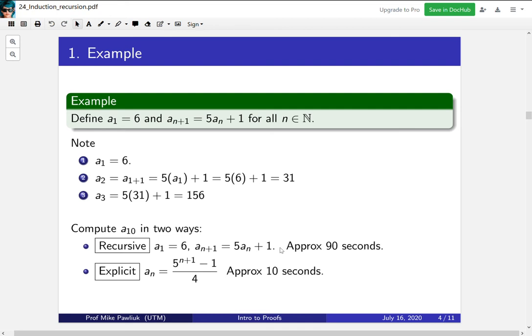a₄, a₅, a₆, a₇, a₈, a₉, and then you could compute a₁₀. But in the explicit definition, you can just plug in a₁₀. You just plug in n equals 10 and you get the answer. So again, this is why these two things should feel very different.